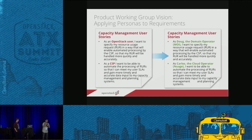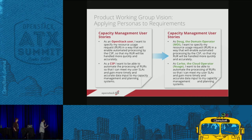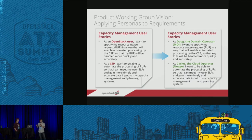Now we're going back into our user stories — this is a real example from the capacity management user story, which was written as 'as an OpenStack user' — and replacing that with 'domain operator,' because the domain operator is really the one interested in managing the resources the provider is giving them. Adding personas to user stories makes them more compelling and the context much clearer.